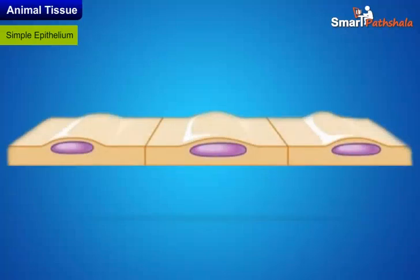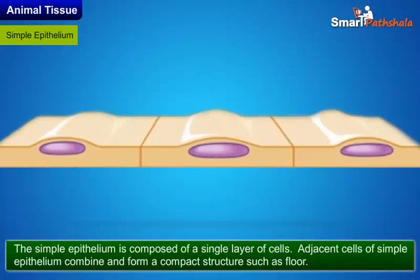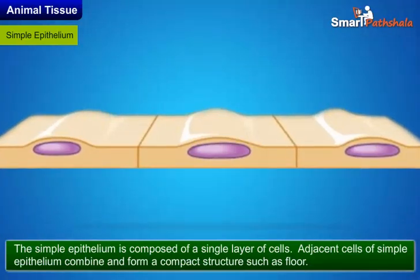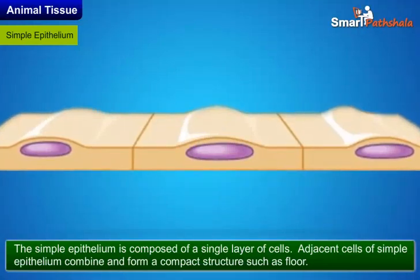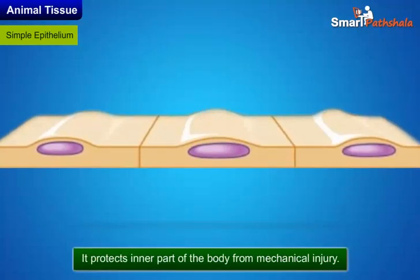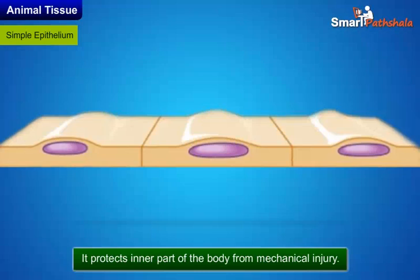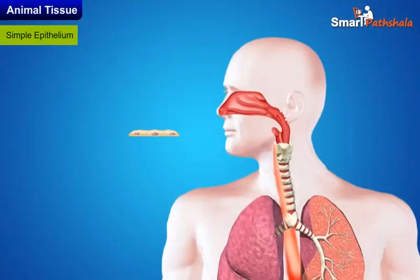Simple epithelium is composed of a single layer of cells. Adjacent cells of simple epithelium combine and form a compact structure such as a floor. It protects the inner part of the body from mechanical injury. For example, the esophagus and the lining of the mouth are also covered with simple epithelium.